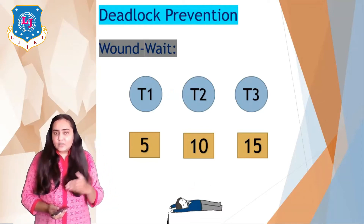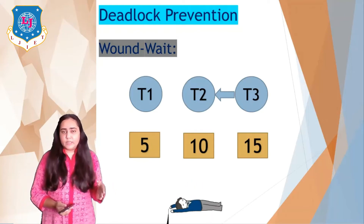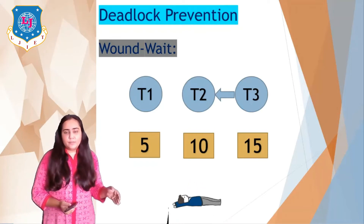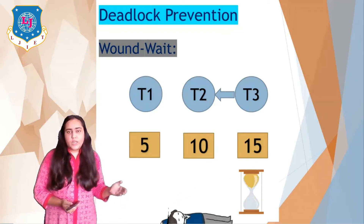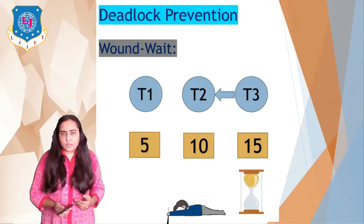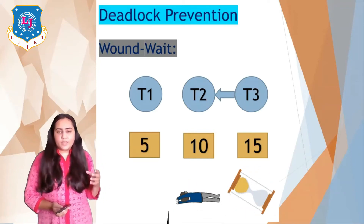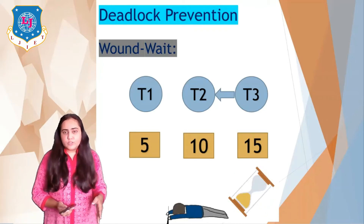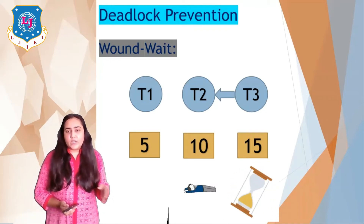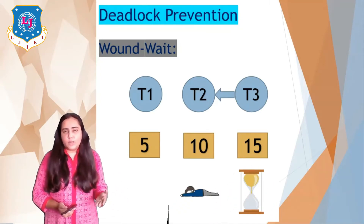Now consider T3 wanting a data item from T2. T3's timestamp is 15 and T2's is 10, so 15 is greater than 10 — the wait part applies, meaning T3 will wait for T2 to finish and then take the data item. So in wound-wait: if an older transaction wants a data item from a younger transaction, the younger transaction rolls back; but if a younger transaction asks for a data item from an older transaction, the younger transaction waits.